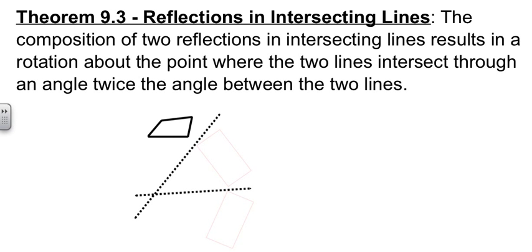Now by the same token, if we reflect in intersecting lines, then we don't get a translation. What we get is a rotation. The center of the rotation is the point where the two lines meet, and the angle of the rotation is twice as big as this angle between the two lines.